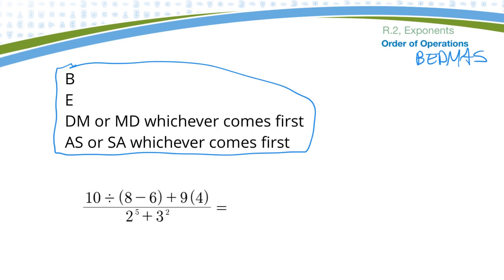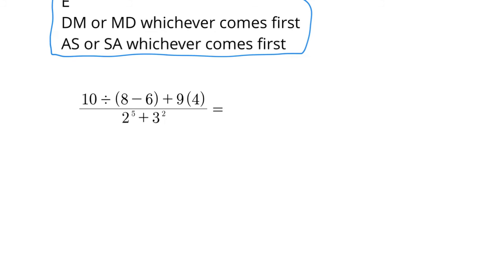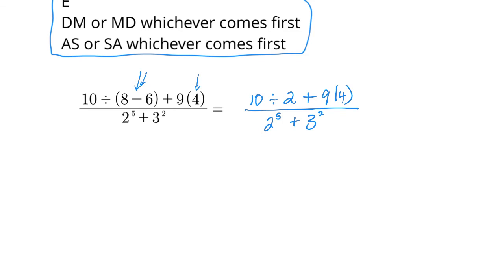In this question I'm looking for brackets first. There are brackets right here and right there, but there's nothing inside those brackets so I could just leave that. I'll leave everything else alone — twelve divide, eight take away six is two — so I'll put a two there, plus nine times four. Sometimes you can do more steps at a time, but it's best to do one thing at a time to avoid confusion.